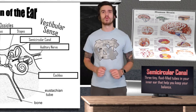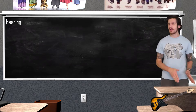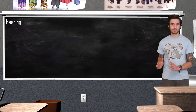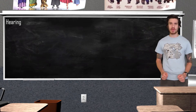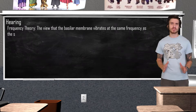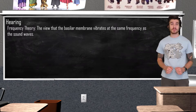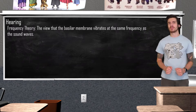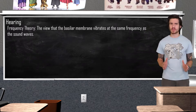Our next topic of discussion will be theories on how we discriminate pitch. How exactly are we able to discriminate between the low pitch of a bass guitar and the high pitch of a flute? To explain this, we are going to return back to our basilar membrane. According to the frequency theory, the basilar membrane is going to vibrate at the same frequency as sound waves. So, if we had a sound wave of 100 Hz, hair cells in the basilar membrane would then be excited to vibrate 100 times a second. The neural message is then sent to the brain at the same rate. There is, however, going to be a limit with how fast our neurons can fire — individual neurons have a firing capacity of about 1,000 times per second, but we are able to sense sounds with frequencies much higher.